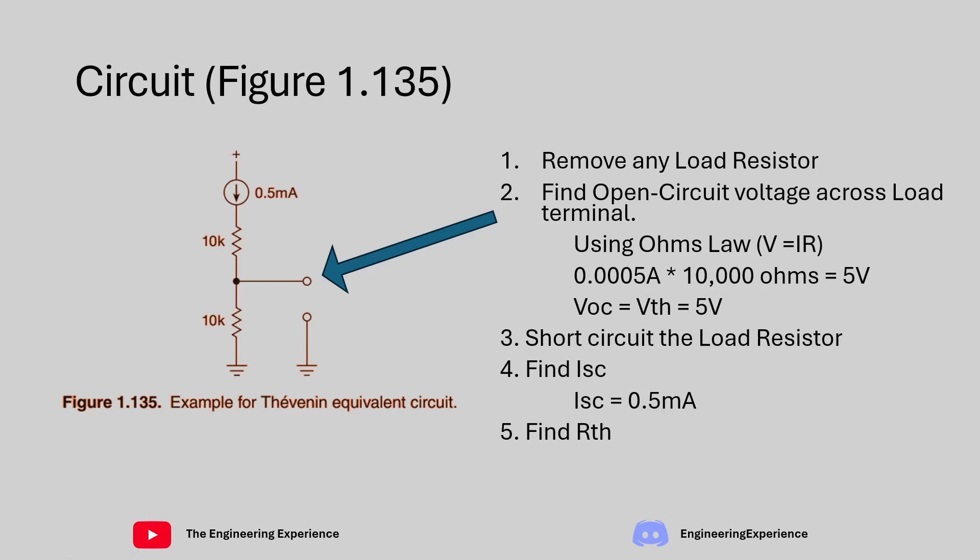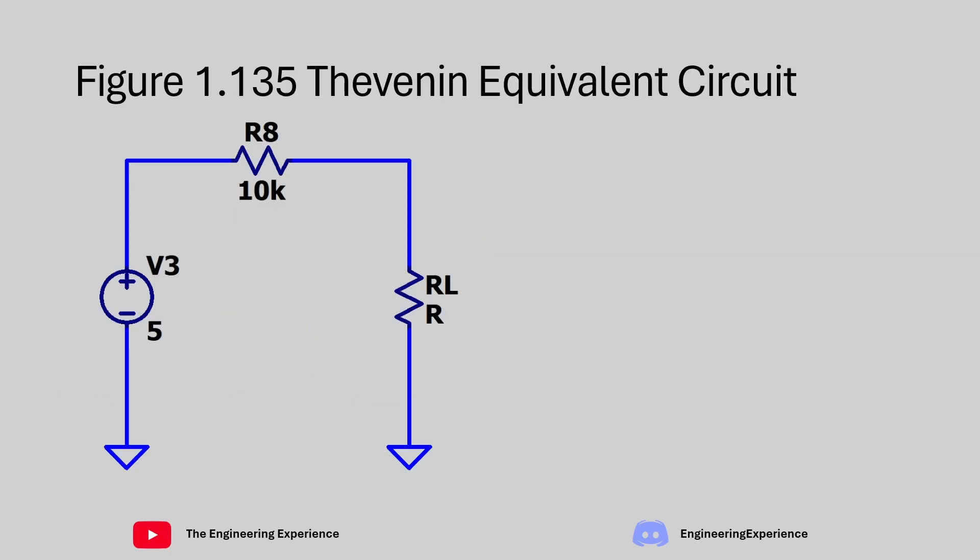After figuring out the short circuit current, we can find the Thevenin equivalent resistance, or RTH. RTH is given using Ohm's law: VTH divided by ISC — that's the Thevenin voltage divided by the short circuit current. So that's 5 volts divided by 0.5 milliamps, which gives us a Thevenin resistance of 10 kΩ.